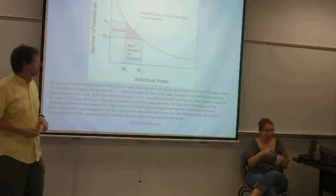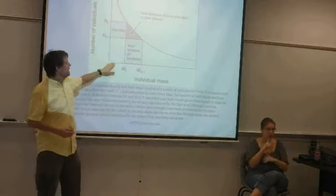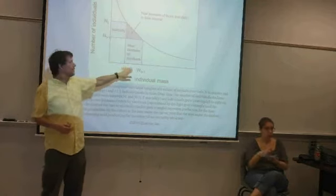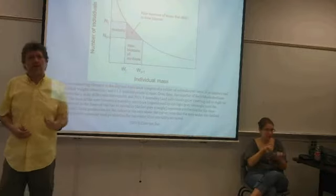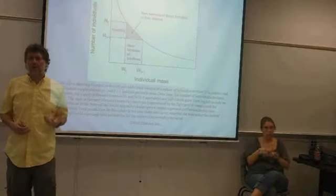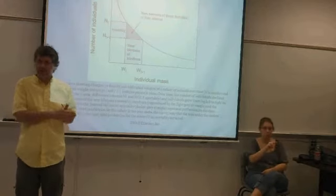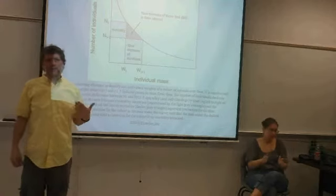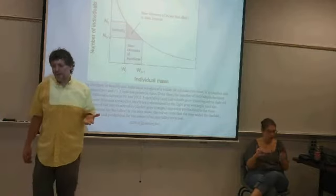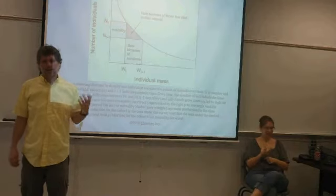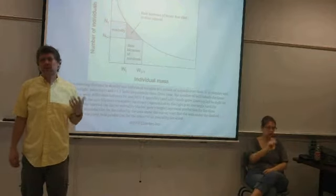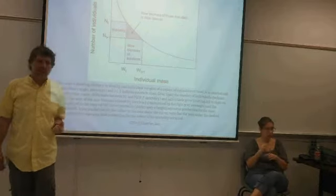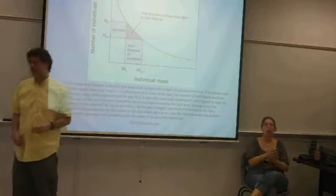Estimating production becomes quite difficult because you have to consider survivorship and growth of each age class over time. To do that, you have to take many samples over time and look at how fast each species is growing — not just counting how many are there and how big they are. My co-author is part of the second wave of aquatic ecologists who have really pushed the idea of estimating secondary production for many systems. It's not commonly done because it's a lot of work, but it's important for understanding how these systems function.